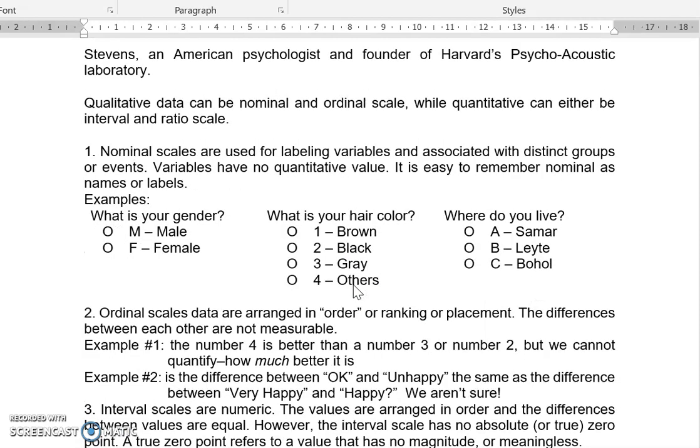The second type of data is the ordinal scales. Now, ordinal scales data are arranged in order. When you hear ordinal, remember. When you say nominal, name, name, names or labels. Ordinal scales, order. Ordinal or order. Or you can have it ranking or placement. It's a type of qualitative data that you can rank or organize based on placement. Now, the differences between each other are not measurable.